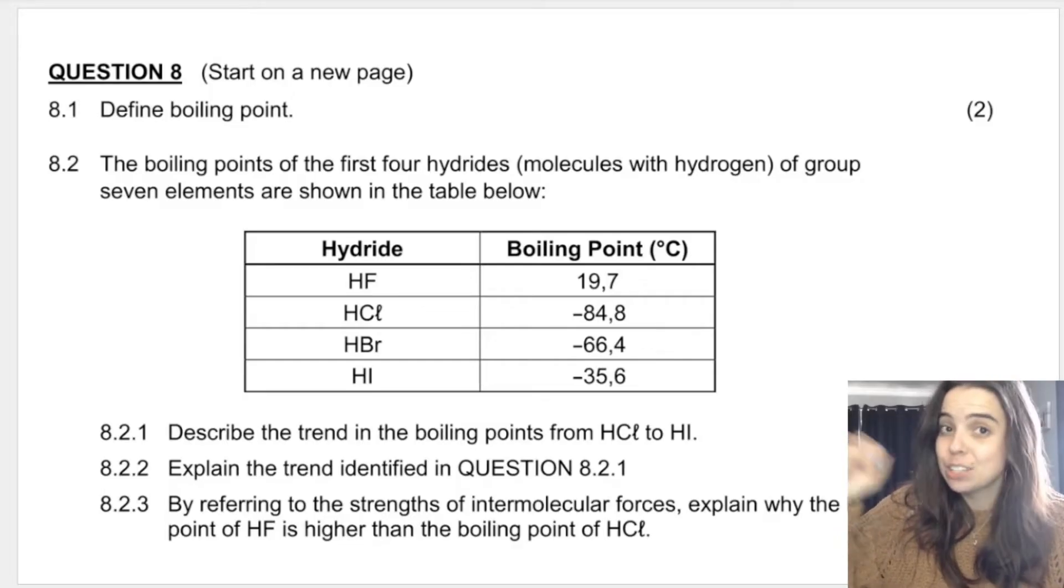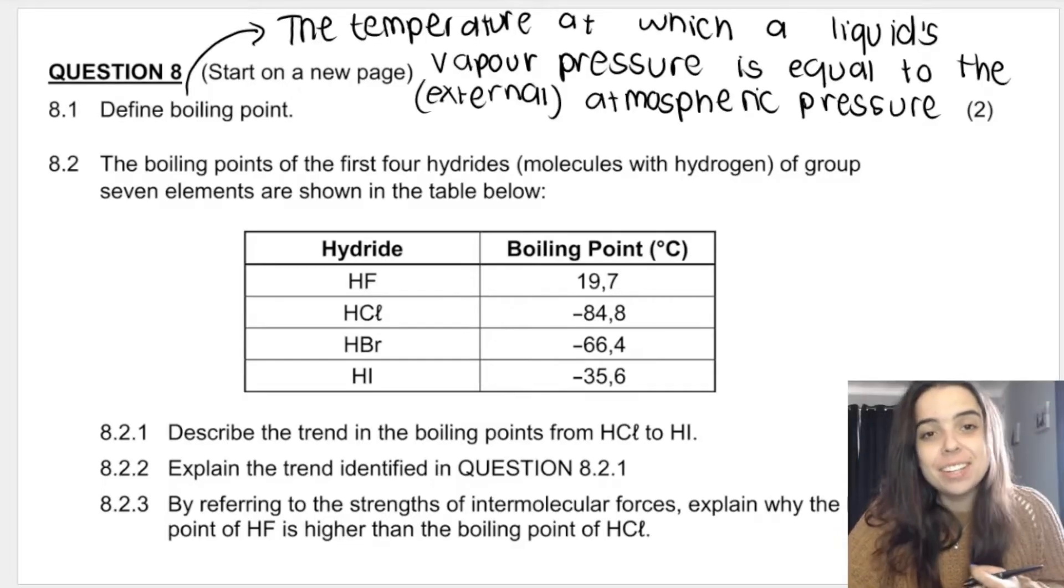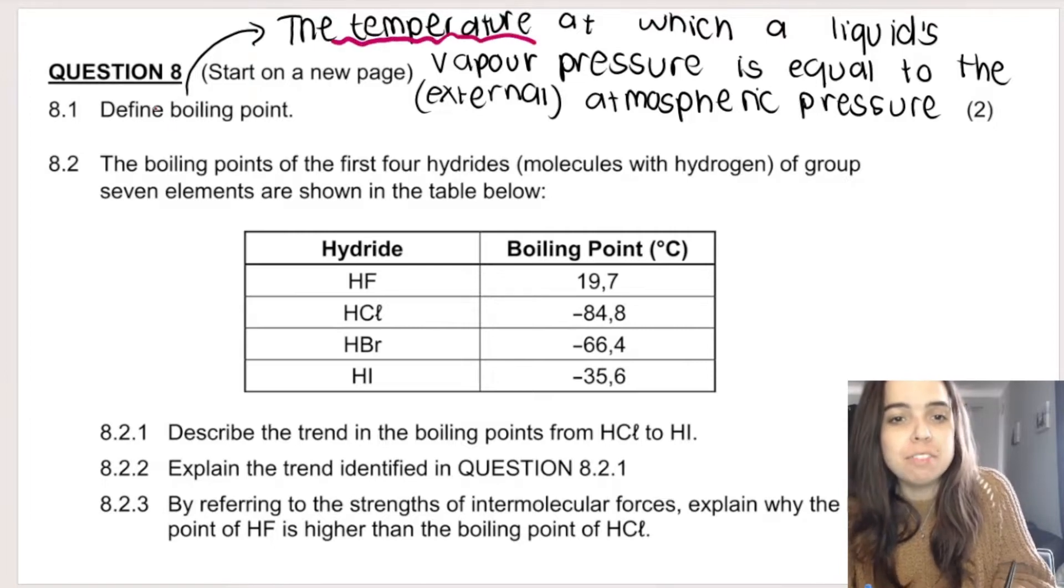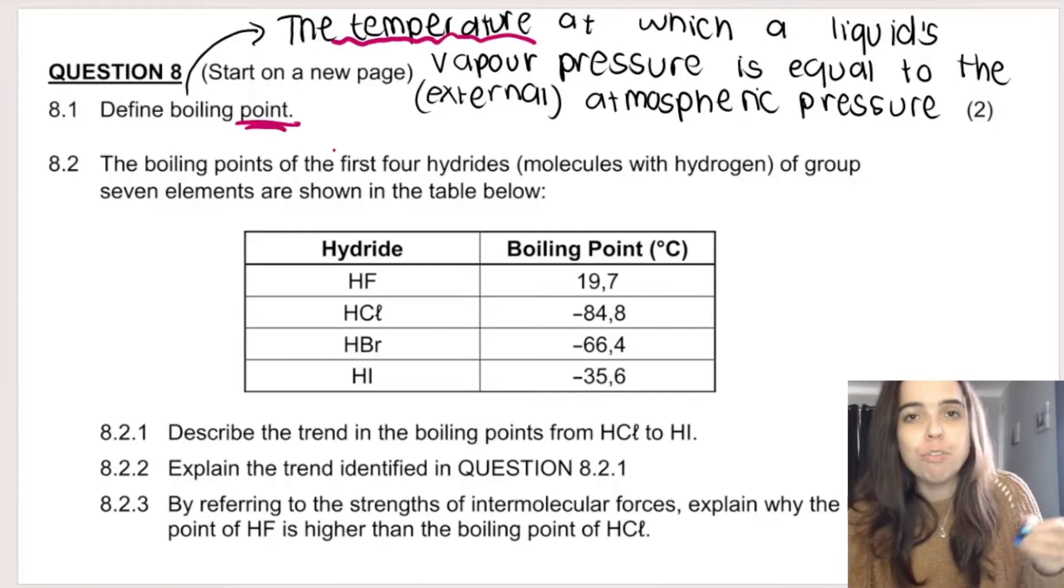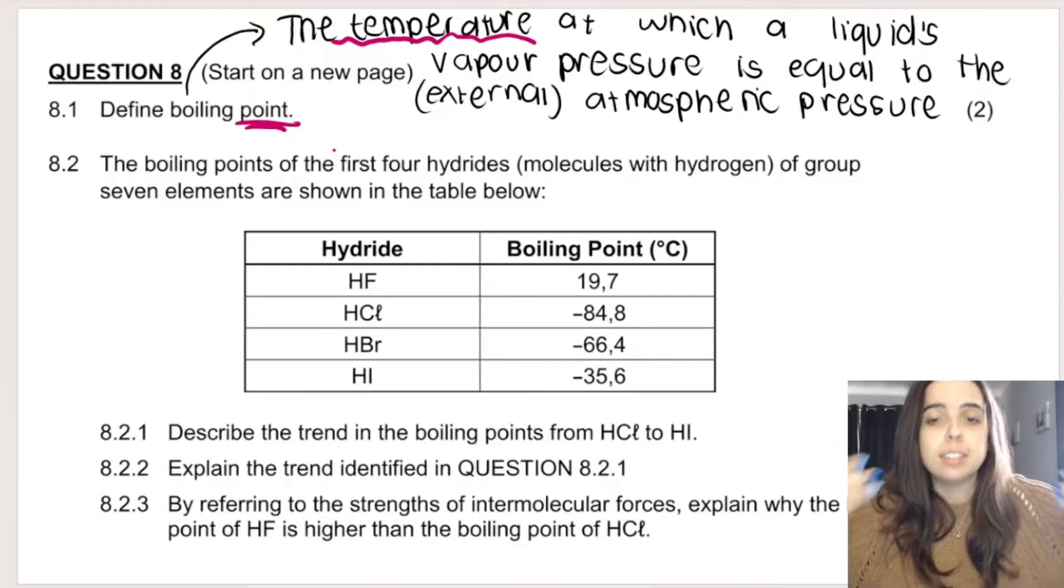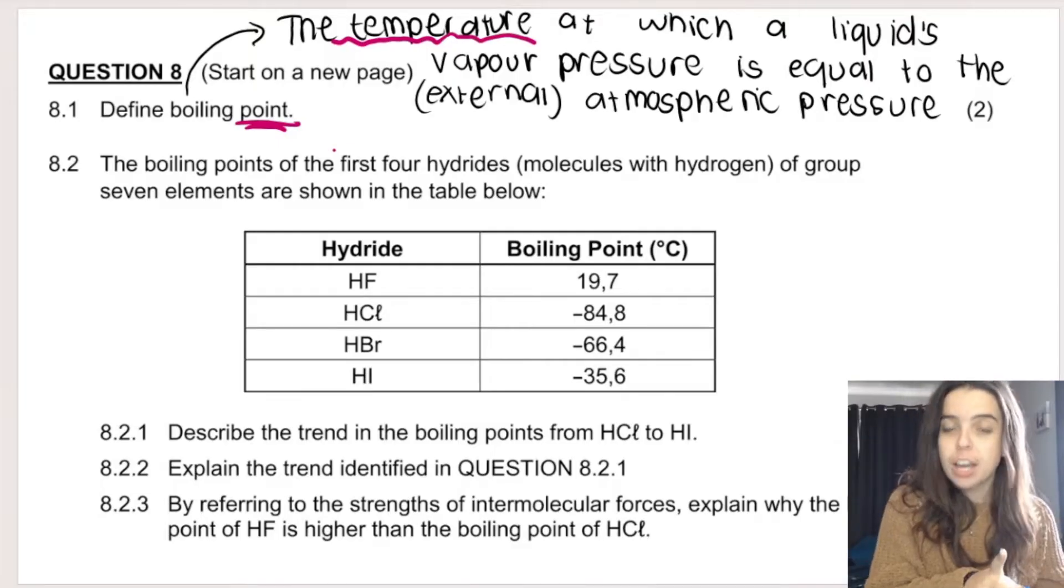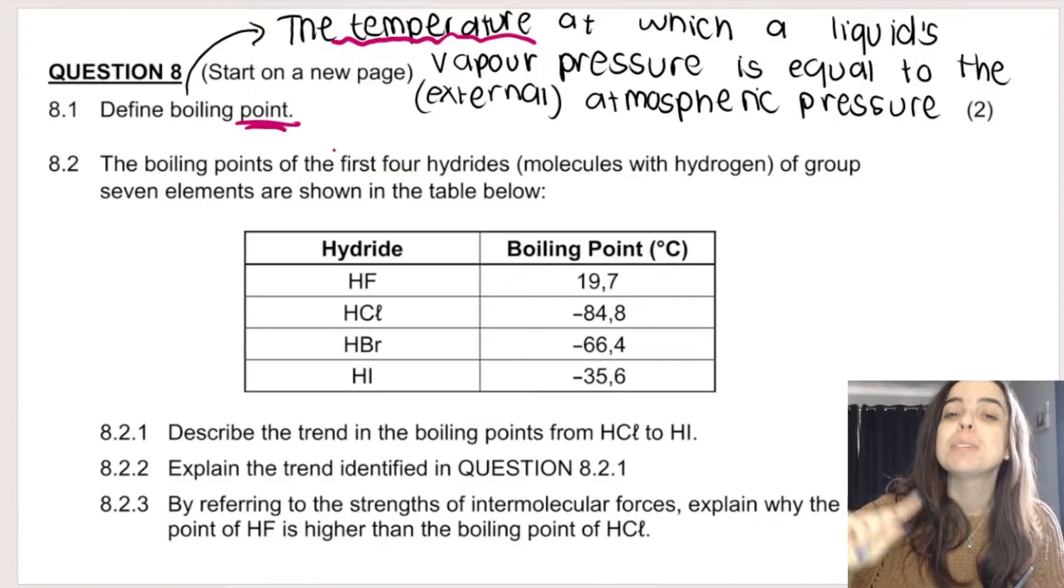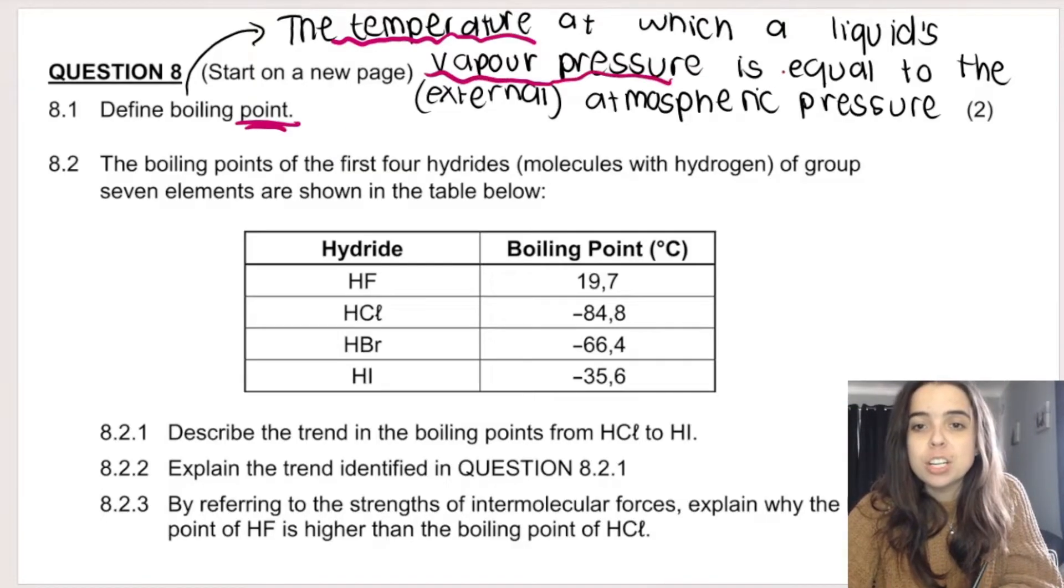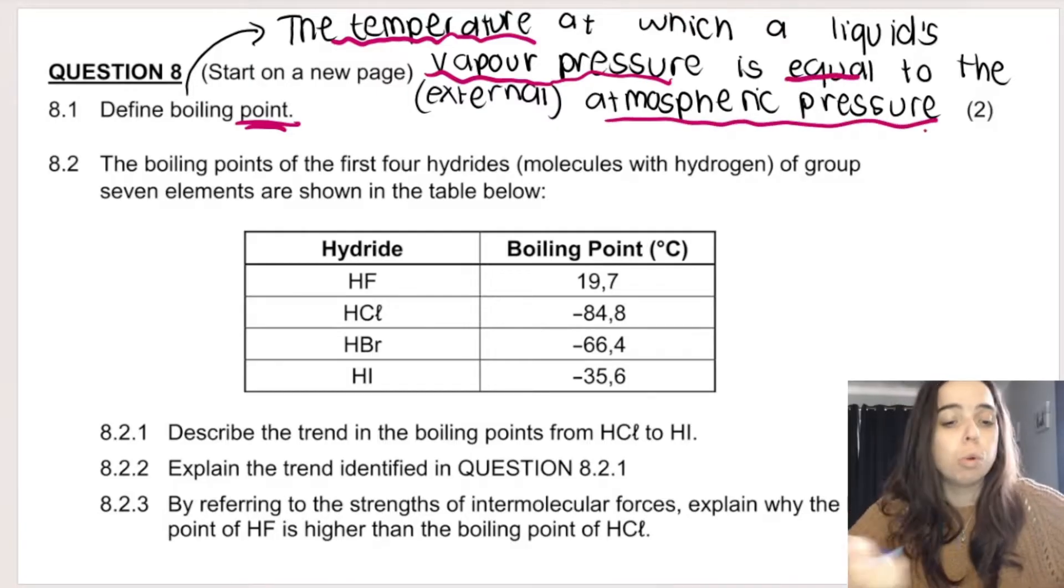This definition, the definition of boiling point, is one of those very important definitions, so let's go over it. There's the definition and I just want you to take note that if, for example, you forgot to say the temperature at which, students often like to say the point at which. It's a temperature. We know the boiling point of water is around 100 degrees Celsius. It's a temperature at which a liquid's vapour pressure is equal to the atmospheric pressure. You must say those key phrases. If you don't say those things, you will lose your marks.